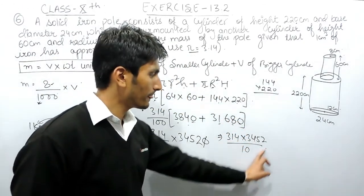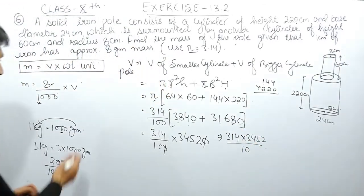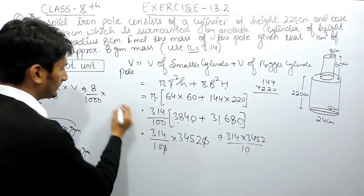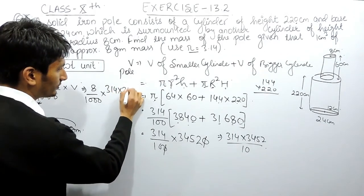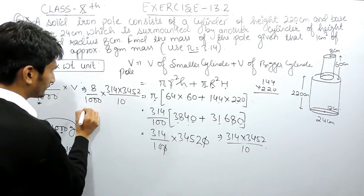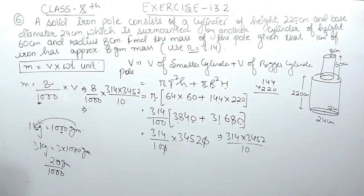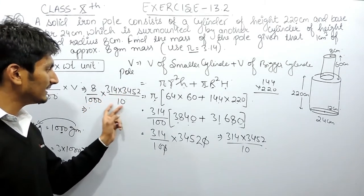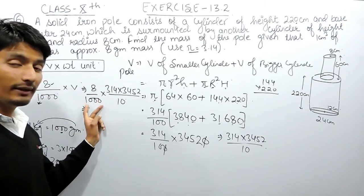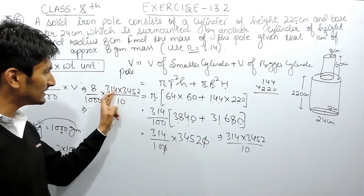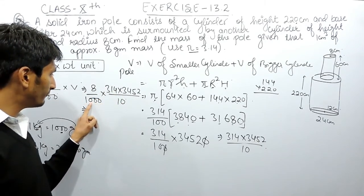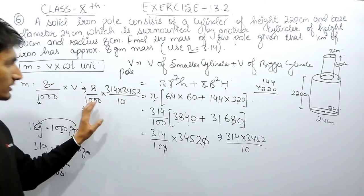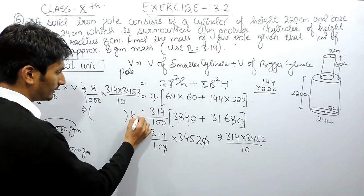Once you have the volume, substitute it into the mass formula: mass equals 8 upon 1000 multiplied by 314 multiplied by the bracket sum divided by 10. Multiply these three numbers together, then count 4 decimal places from the right to place the decimal point. The resulting answer will be in kg because we have already converted grams into kg.